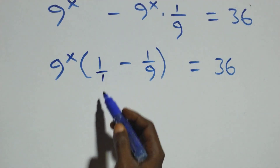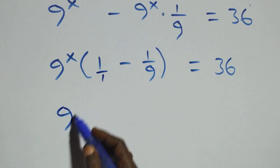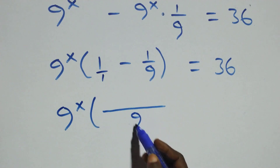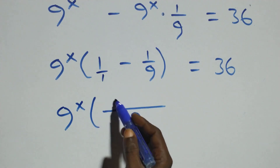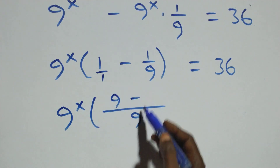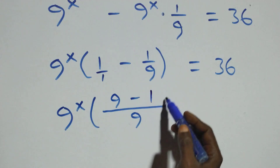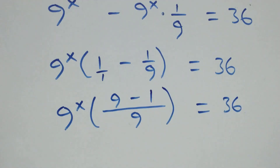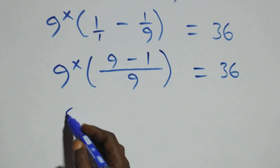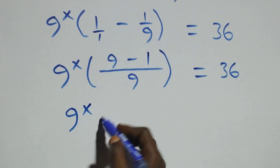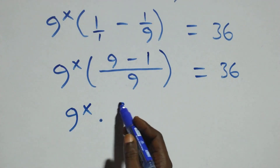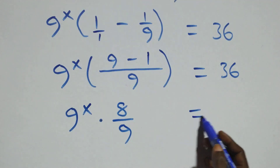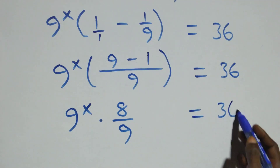We bring the bracket together as one fraction: 9 raised to power x times (9 minus 1) over 9, which simplifies to 9 raised to power x times 8 over 9, equals 36 on this side.